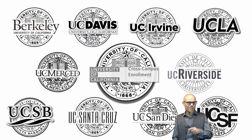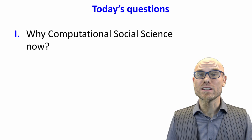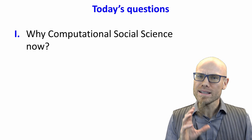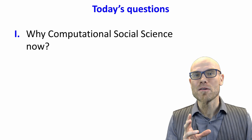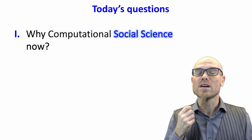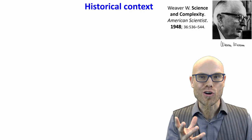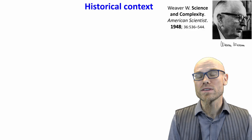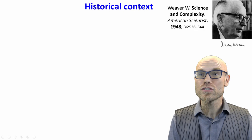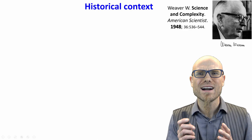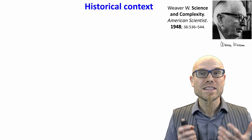I'm looking forward to exploring everything together with you. Now, before going deeper into the computational tools, let's look at the second part of what computational social science is about: social science. Why is it so important, urgent, and relevant to do social science, and why now? Let's take a little historical context. Warren Weaver, a big advocate of science in the last century, wrote an influential article in 1948 about 'Science and Complexity.'